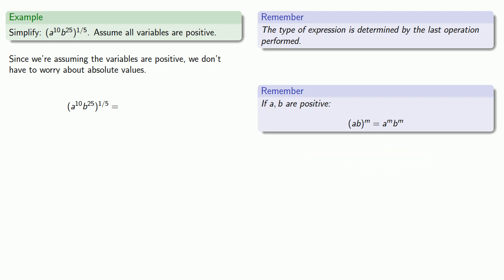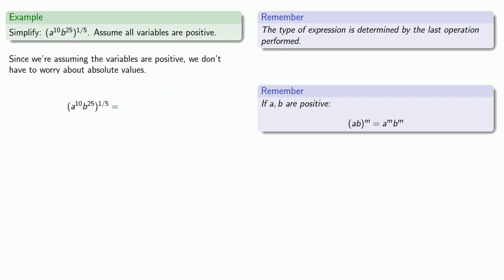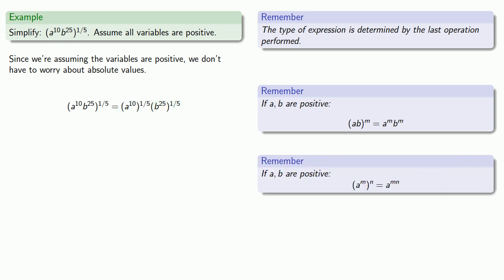We can rewrite this by applying the product rule. Taking a closer look at the individual terms, the power-of-a-power rule applies because these are all powers of a or b raised to some additional power. So we multiply the two exponents to get the final answer.